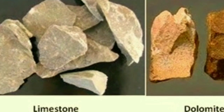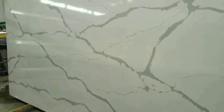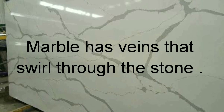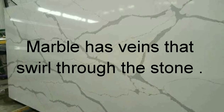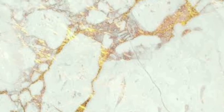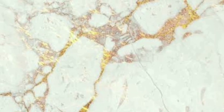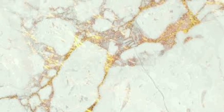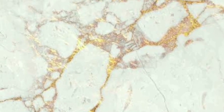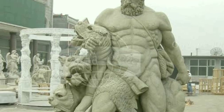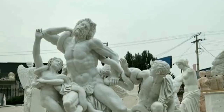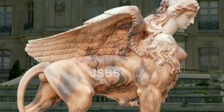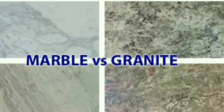Marble has veins and swirls through the stone. The veins are formed when the marble is carved out. The mineral content including iron gives marble its unique coloring and appearance.